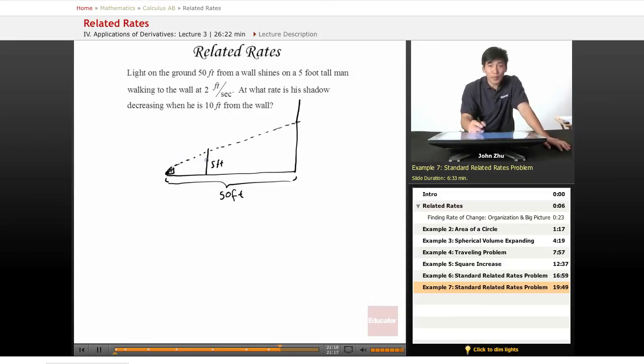Let's put some variables in here so we can use them to solve for derivatives. We're asking for the rate of his shadow decreasing. So here's his shadow. Let's call that Y. We know that he's walking to the wall at two feet per second.